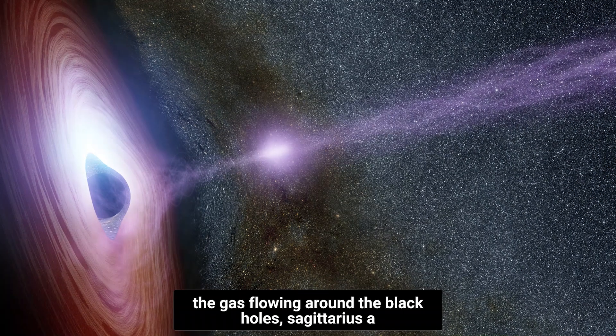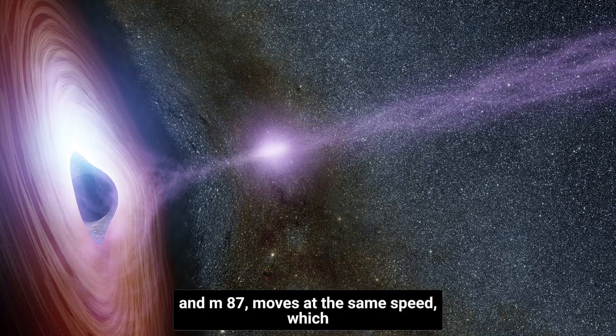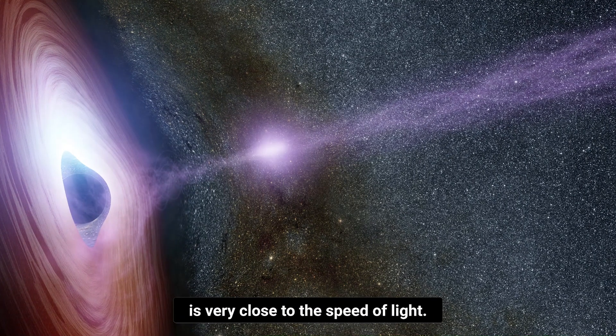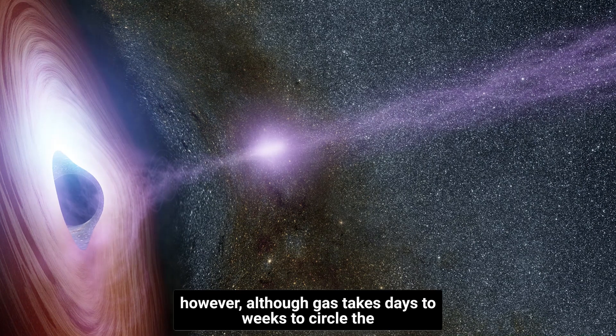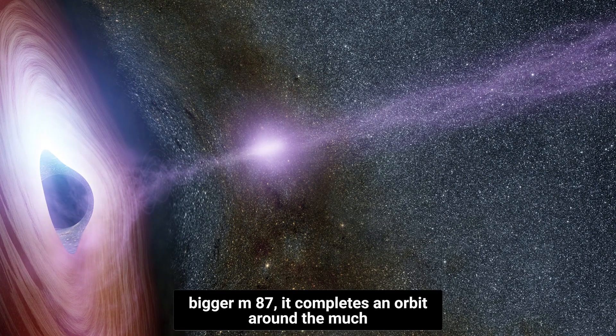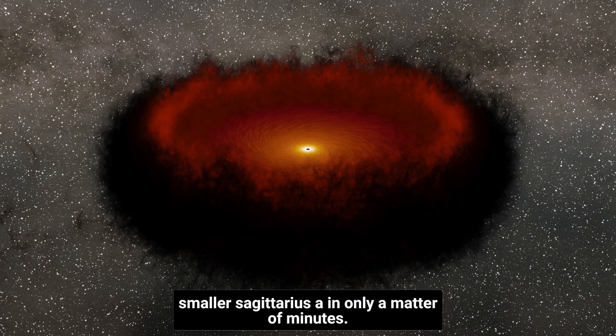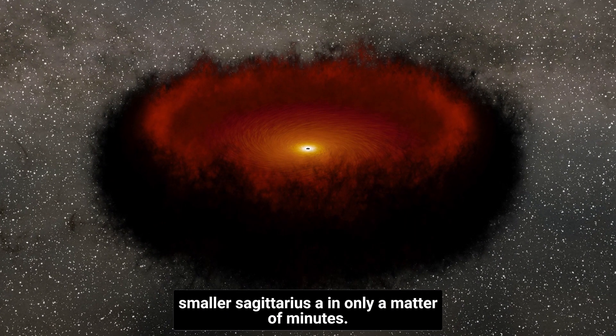The gas flowing around the black holes, Sagittarius A and M87, moves at the same speed, which is very close to the speed of light. However, although gas takes days to weeks to circle the bigger M87, it completes an orbit around the much smaller Sagittarius A in only a matter of minutes.